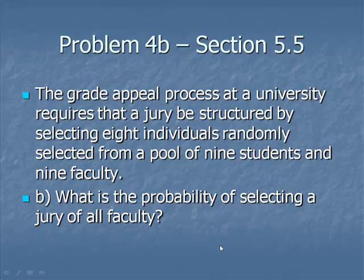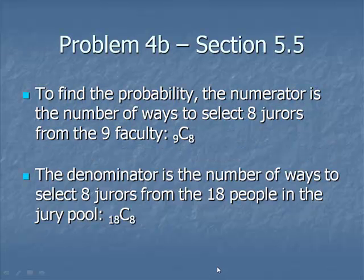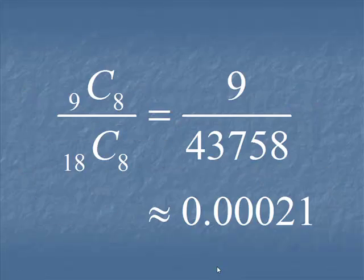Part B of this problem. Same setup, except this time we're looking for the probability of getting a jury of all faculty. Same setup. The number of ways to select 8 of the 9 faculty is 9C8. We get the same exact calculation.